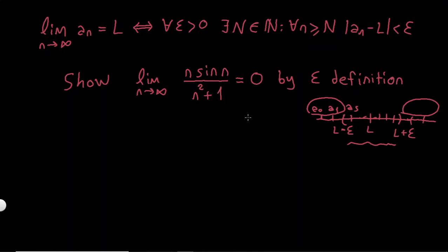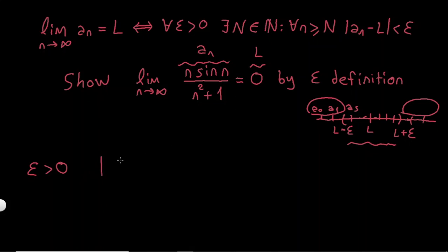Let's see how we can use it. So my aₙ is n·sin(n) / (n² + 1), and my l is 0. Let's use this definition. Epsilon greater than 0 is given. Now I should write |aₙ minus l|, which is n·sin(n) / (n² + 1) minus 0, because l is 0.